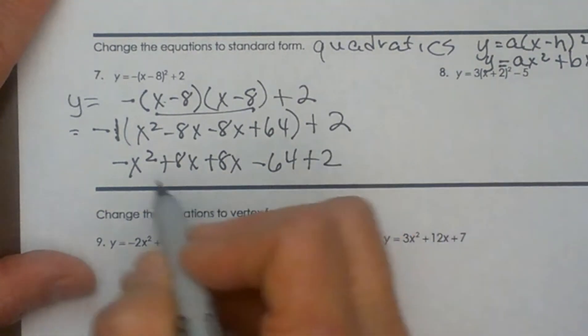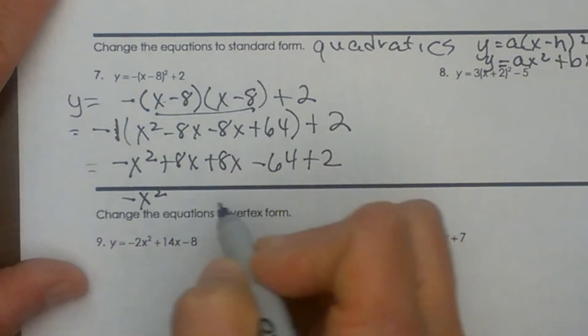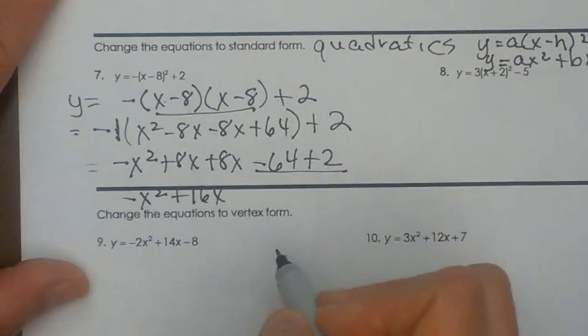Now let's simplify. What am I left with? I'm left with -x² + 16x, and then -64 + 2 is -62.